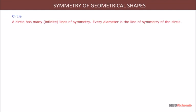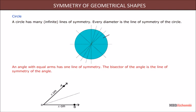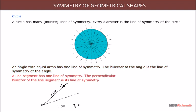A circle has many — infinite — lines of symmetry. Every diameter is the line of symmetry of the circle. An angle with equal arms has one line of symmetry; the bisector of the angle is the line of symmetry of that angle. A line segment has one line of symmetry; the perpendicular bisector of the line segment is its line of symmetry.